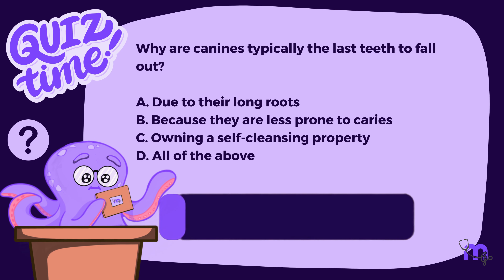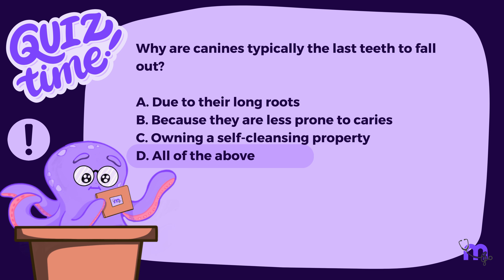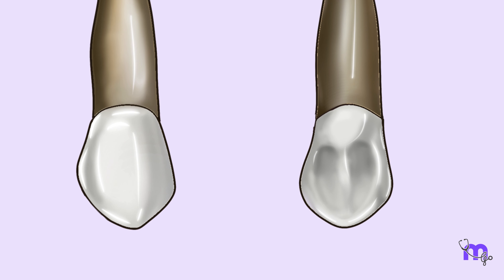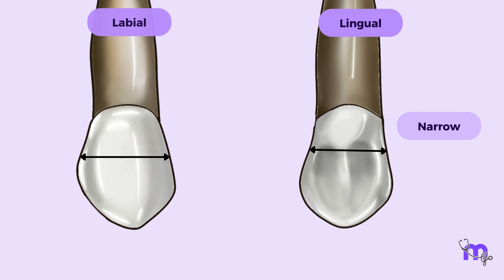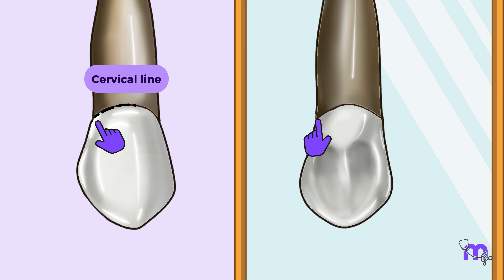Unlike the incisors, canines have a cusp instead of an incisal edge or ridge. It has two slopes: a mesial slope and a distal slope. Originating from the mesial crest of curvature, the outline descends along a slope towards the cusp tip — known as the mesial cusp slope. From the cusp tip, the distal cusp slope commences and ends at the distal crest of curvature, situated in the middle of the middle third. The cusp tip is centered over the root, with the mesial slope shorter than the distal slope. The distal outline then exhibits concavity until reaching the distalmost end of the cervical line.